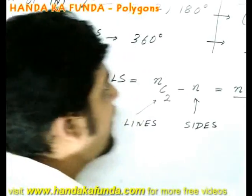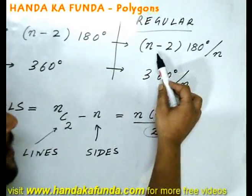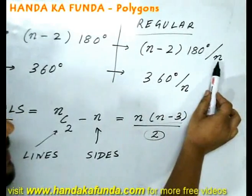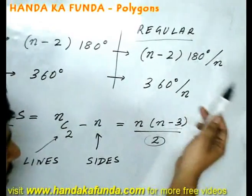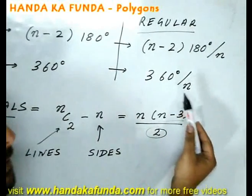The angle in case of a regular polygon, all of them will be equal. So each interior angle will be n-2 into 180 degree divided by n. Each exterior angle with a similar logic will be 360 degree by n.